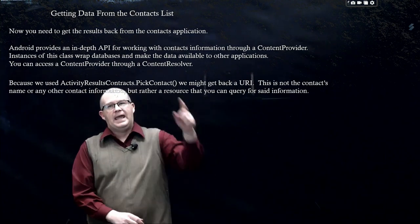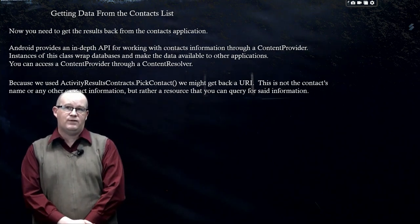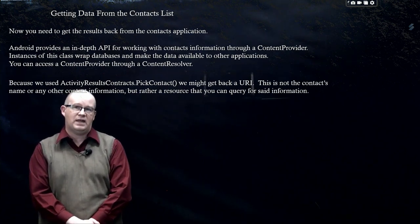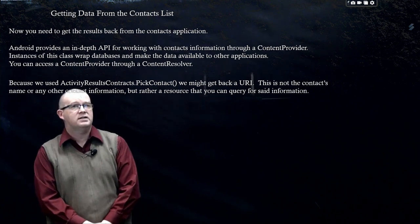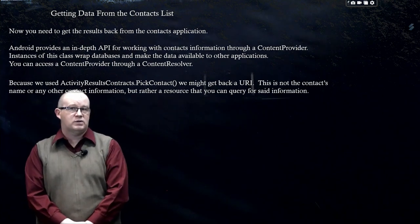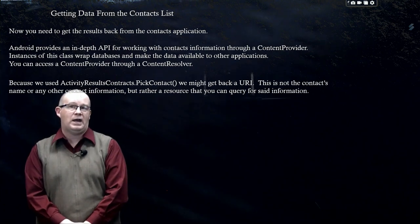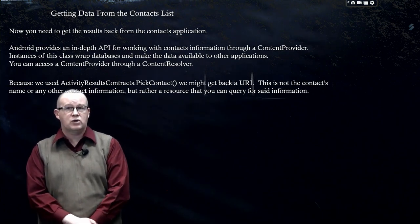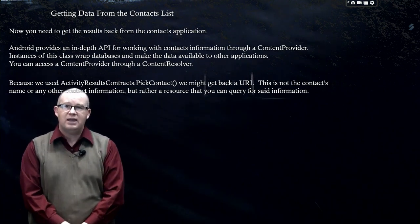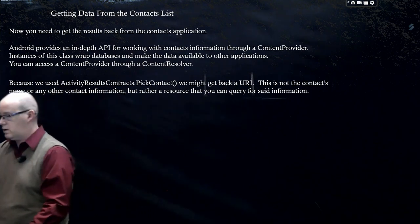Here's how we're going to do it. Android provides an in-depth API for working with contacts information through something called the content provider. Instances of this class wrap databases and make the data available to other applications. We can access the content provider through the content resolver. Because we used ActivityResultContracts.PickContact, we might get a URI back as a result — 'might' because the user could back out, in which case we would not get the URI. This is not the contact's name or other information, but rather just a resource that we can query for that information.